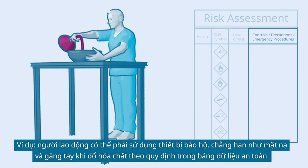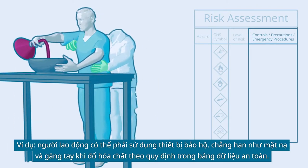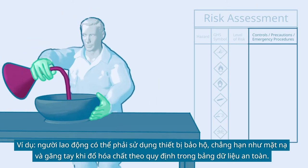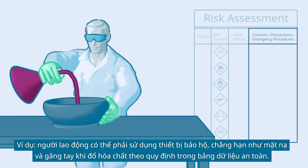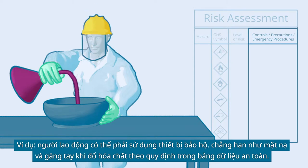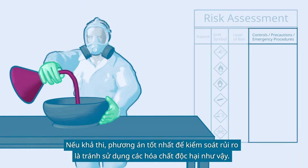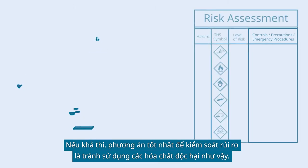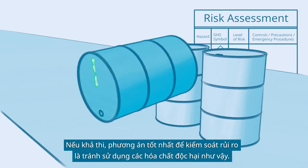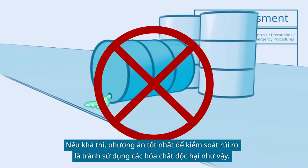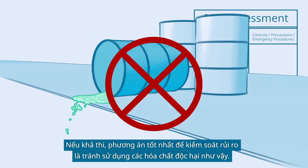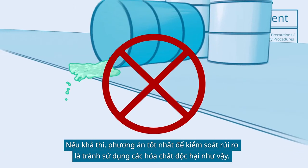For example, the worker may have to use protective equipment such as a face shield and gloves while pouring, as prescribed in the Safety Data Sheet. If feasible, the best option to control the risk is to avoid using such hazardous substances.